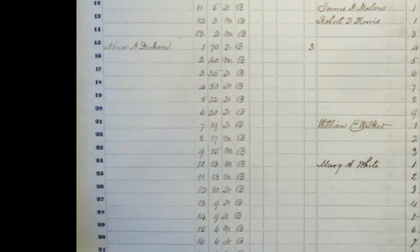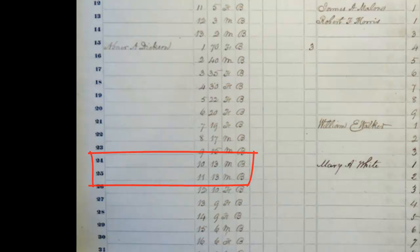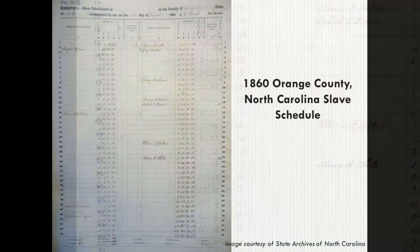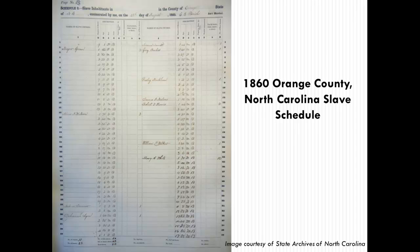Once you identify slaveholders with the same surname, look for a male or female slave who was about ten years younger in 1860 than the ancestor identified on the 1870 census schedule. If the ancestor was born prior to 1850, repeat the process for the 1850 slave schedule — you will be looking for a person who is about twenty years younger in 1850 than in 1870. Be sure to expand your search to include other members of the ancestor's family listed on the 1870 census.